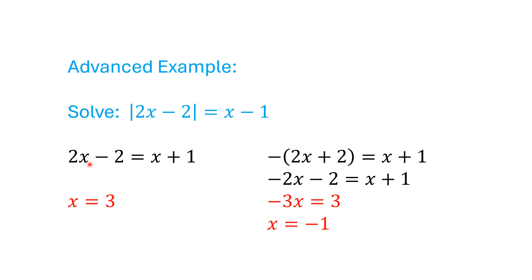This side, we end up with x = 3. This side, we end up with -3x = 1, or x = -1.